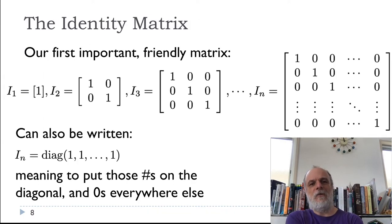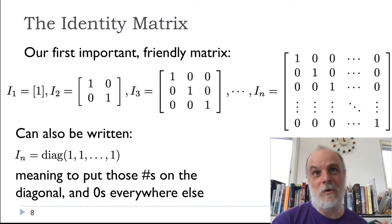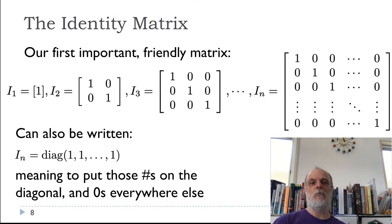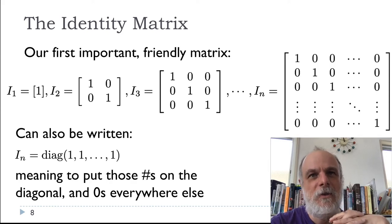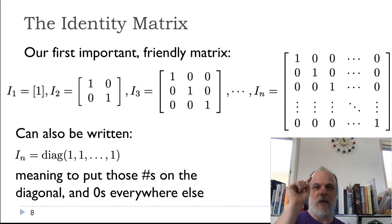All right, our first important kind of friendly matrix is what's called the identity matrix. The identity matrix, usually I'm not even going to bother writing a subscript on it, I'll just write the capital letter I. But here on the screen for the moment I've written I1, I2, I3, and so on to In. And what the identity matrix is, is it's a square matrix where the elements on the diagonal are all one and everything else is all zero.